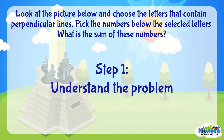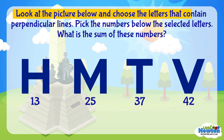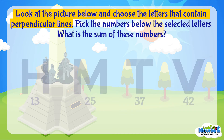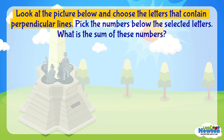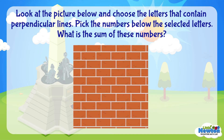Let's break down the question and understand it. Look at the picture below and choose the letters that contain perpendicular lines. Do you know what type of lines we are asked to look out for? Yes, perpendicular lines. Do you know what perpendicular lines are? They are two lines that meet at a right angle. Take this brick wall for example — do you notice that this line and this line meet at a right angle? These two lines are perpendicular lines.